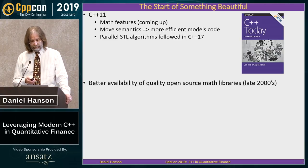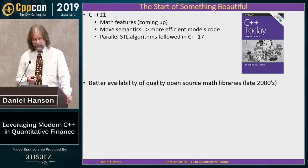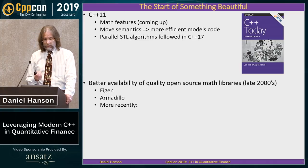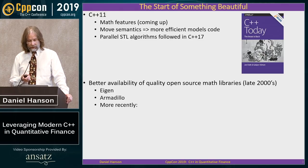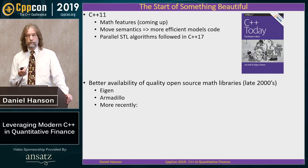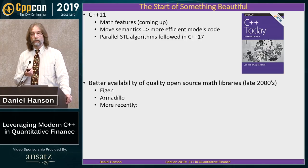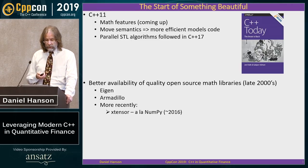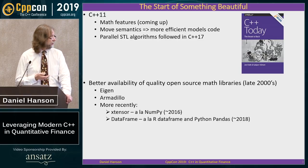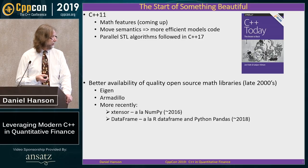The other thing that happened was better availability of decent open-source math libraries. For example, Eigen and Armadillo are both quite popular in finance. They don't just include matrices, vectors, and basic operations — they also include a lot of advanced decompositions, which are necessary for a lot of financial modeling. More recently I've heard about some new libraries, and if they can do what they claim, that would also be great.